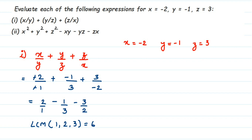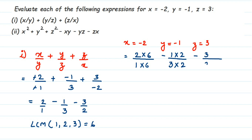Now change all denominators to 6. For 2/1: multiply numerator and denominator by 6 to get 12/6. For -1/3: multiply by 2 to get -2/6. For -3/2: multiply by 3 to get -9/6. Remember, you must multiply both numerator and denominator so the value of the number doesn't change.